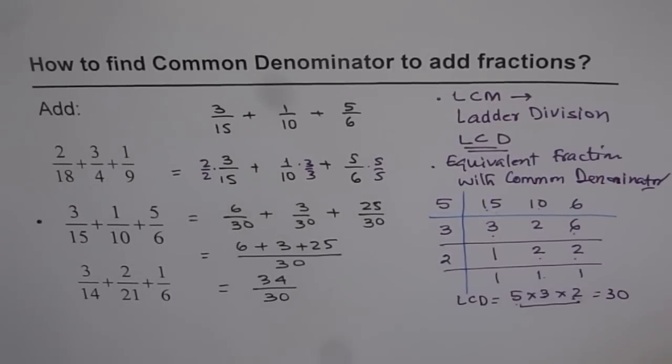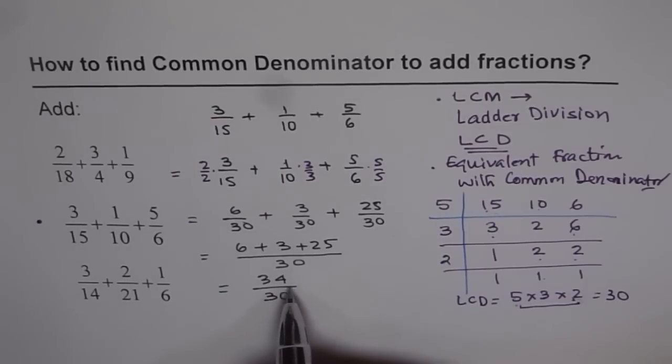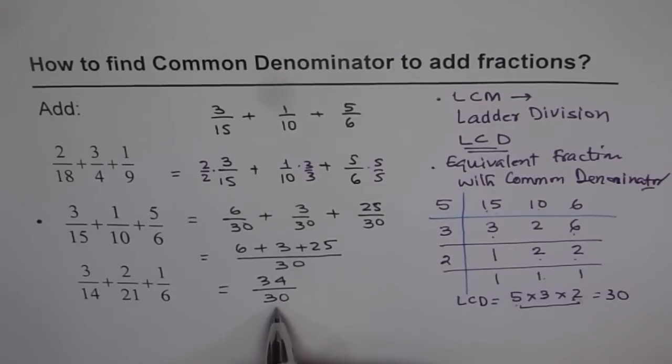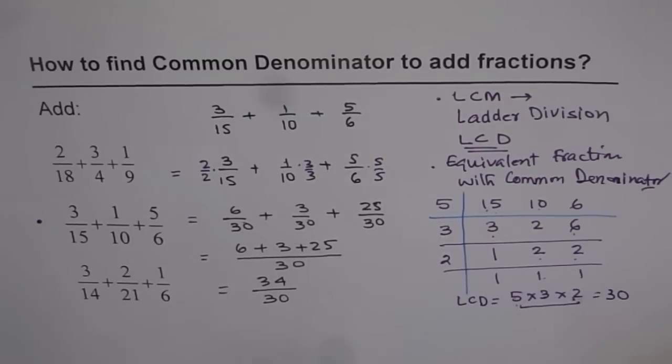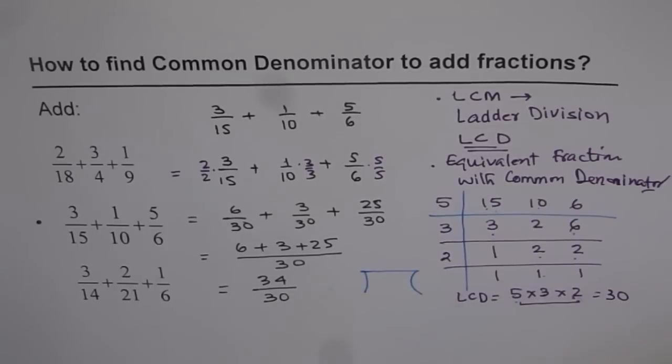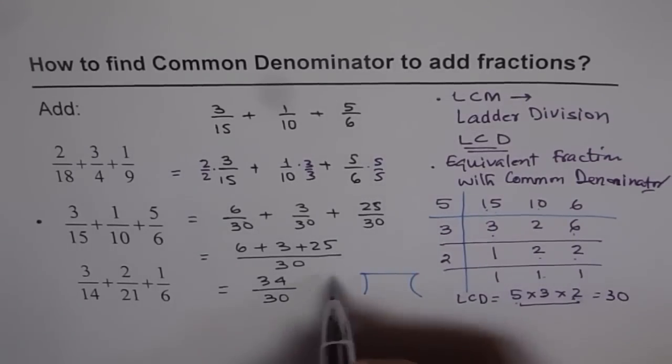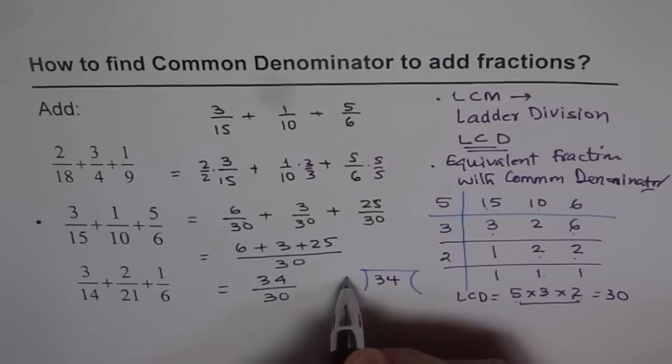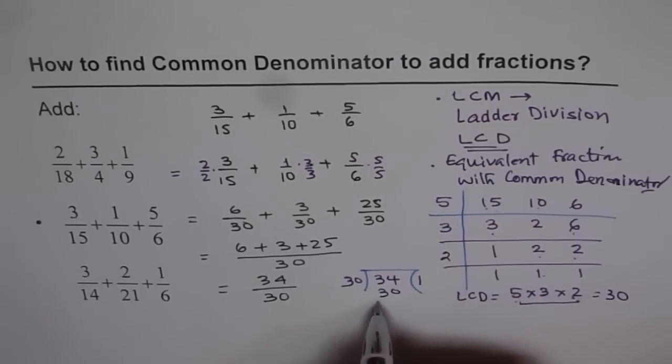Now 34 over 30 is an improper fraction since numerator is more than the denominator. So in this case, we should write it in mixed fractions. So how to convert improper to mixed? So we will divide 34 by 30. So let's do that on this side. So we will do long division this time. So we are dividing 34 by 30. It goes one time and we get 4 as the remainder.